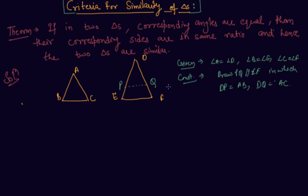As I told you in my previous videos on congruence, two triangles can be congruent when they are similar in shape and size. Here I state that DP equals AB and DQ equals AC, so BC should always be equal to PQ. Hence triangle ABC should be congruent to triangle DPQ.